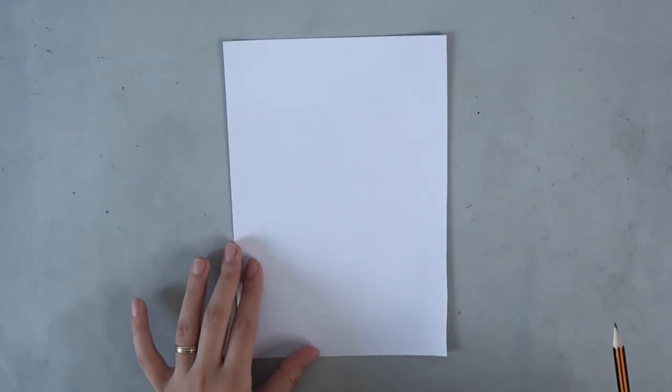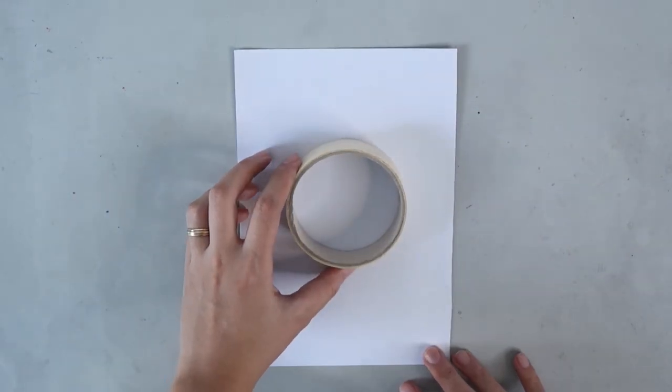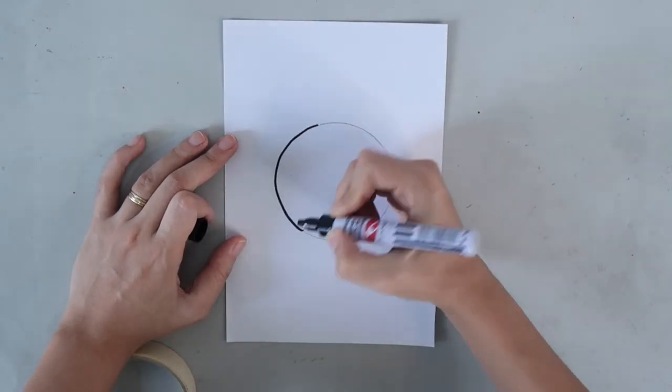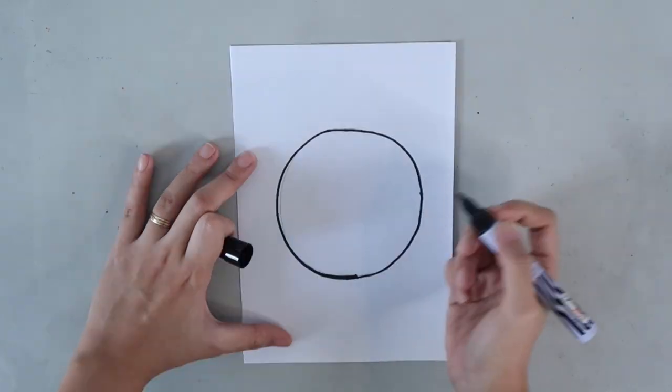You may also use an object with a round shape and trace it on your paper. Here, I'm using a masking tape, tracing it with a pencil, and then with a marker.